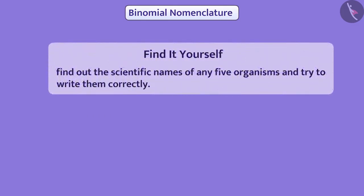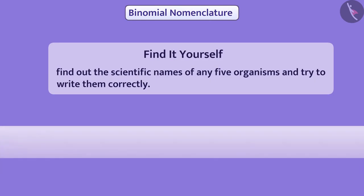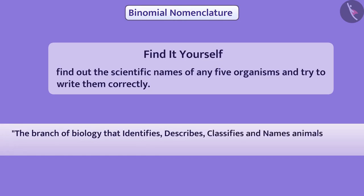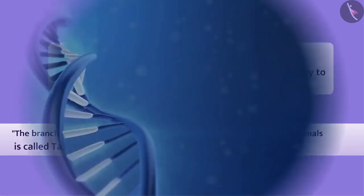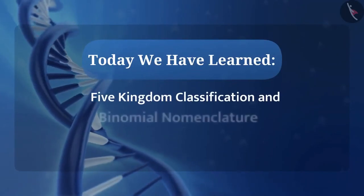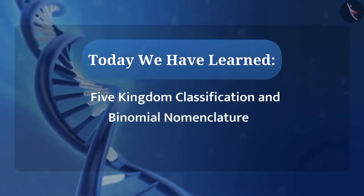Here is a task for you: find out the scientific names of any five organisms and try to write them correctly. The branch of biology that identifies, describes, classifies, and names animals is called taxonomy. Today we have learned five kingdom classification and binomial nomenclature.